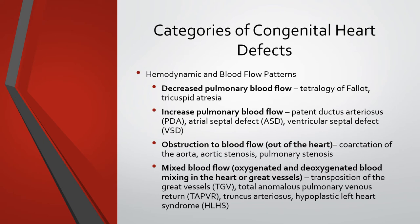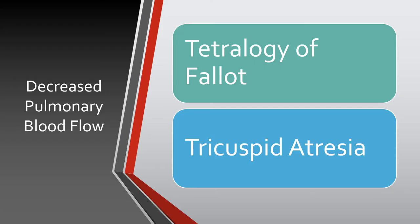Congenital heart defects can be categorized by hemodynamic and blood flow patterns. The first category is decreased pulmonary blood flow, which involves right-to-left shunting. It occurs when there is obstruction of blood flow to the lungs. Children will typically exhibit low oxygen saturation levels ranging from about 50 to 90 percent, which can produce severe cyanosis. To compensate, the kidneys produce increased erythropoietin to stimulate bone marrow to release more RBCs — this increase is called polycythemia. Tetralogy of Fallot and Tricuspid atresia are the decreased pulmonary blood flow disorders; these patients are cyanotic.